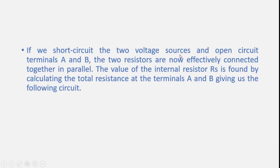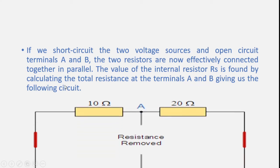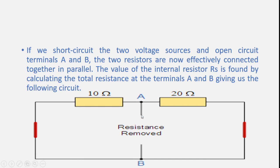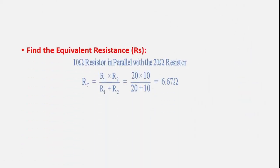If we short circuit the two voltage sources and open circuit the terminals A and B, the two resistors are now effectively connected together in parallel. The value of the internal resistance RS is found by calculating the total resistance at terminals A and B. Since 10 ohm and 20 ohm are connected in parallel, RS equals R1 multiplied by R2 divided by R1 plus R2, which gives 6.67 ohm.